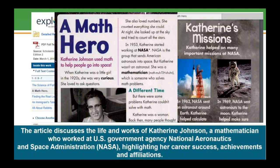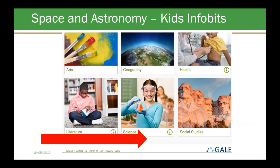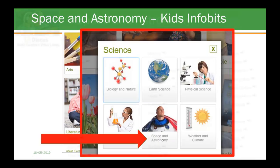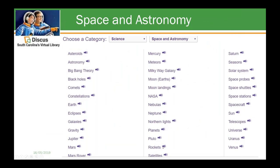In Kids InfoBits, we do have a space and astronomy section where you can pull videos, images, book excerpts, and other information right into your Google Drive. You would just go into space and astronomy and be able to browse all of those pieces. This is also good to share with parents so they know kids can continue reading and staying engaged at home. It's very easy for a child to navigate and find more information, and it's another good opportunity to include points for summer reading.